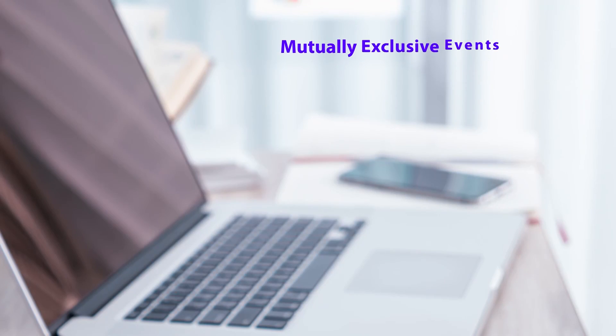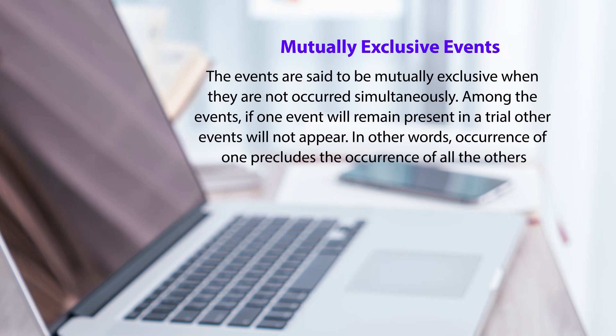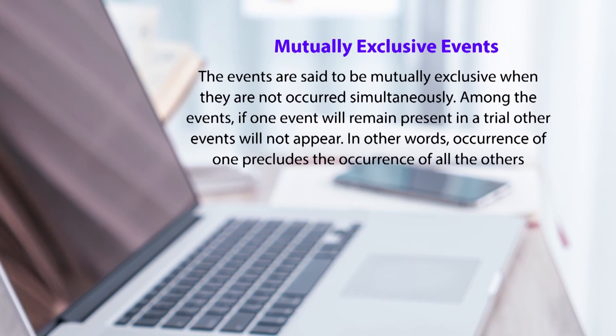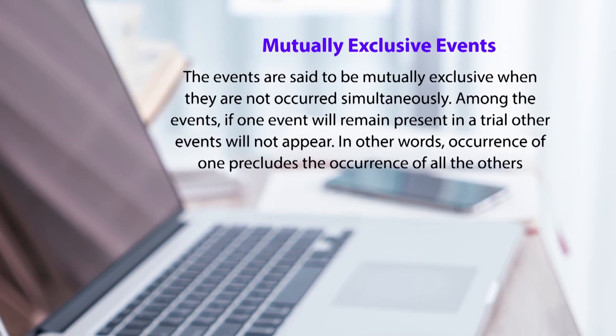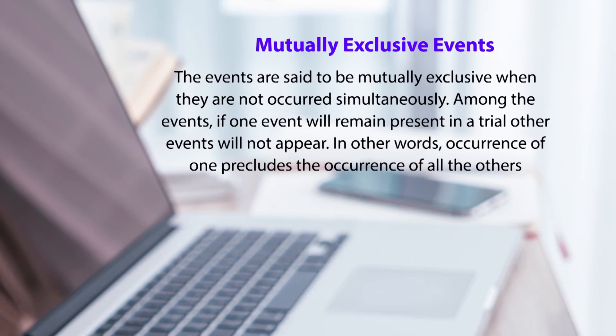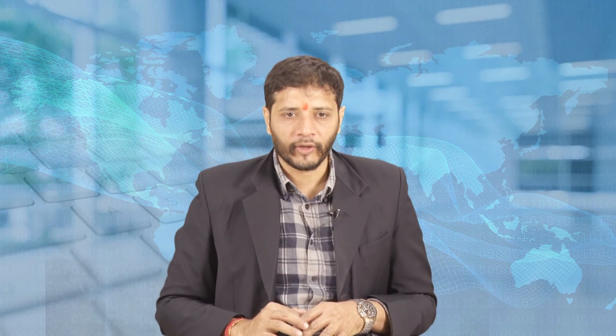Mutually exclusive events are said to be mutually exclusive when they cannot occur simultaneously. Among the events, if one event is present in a trial, the other events will not appear — occurrence of one precludes the occurrence of all others. For example, if a girl is beautiful she cannot be ugly; if a ball is white it cannot be red. If we take the events of dead and alive, a person will be either alive or dead at a point of time but cannot be both simultaneously. If a coin is tossed, either the head or the tail will appear, but both cannot appear at the same time — so in tossing a coin, the occurrence of head and tail comes under mutually exclusive events.